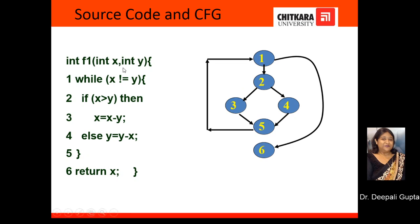We have not numbered the first statement here because anyway that will get executed. In the rest, we have numbered them as 1, 2, 3, 4, 5, and 6. These numbered statements will become nodes in the control flow graph. After numbering these statements, the next step is to draw a node corresponding to every statement — that is, for statement 1 we will draw node 1, and similarly nodes 2, 3, 4, 5, and 6. The next step is to draw an edge from one node to another node.